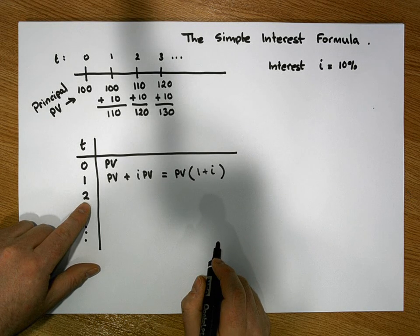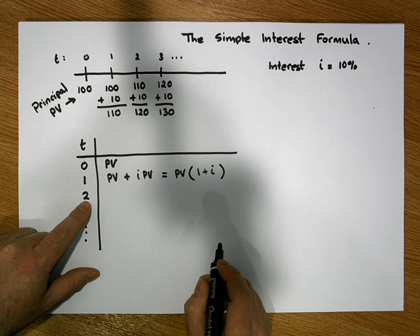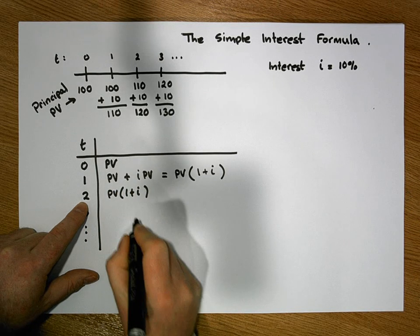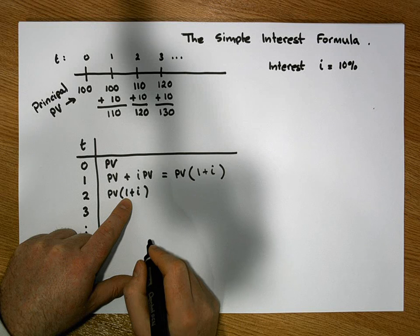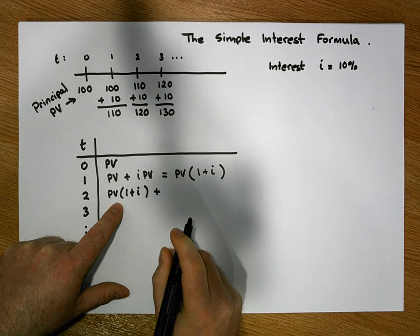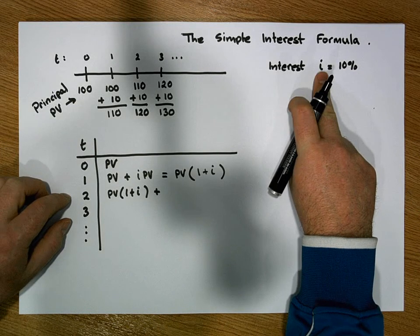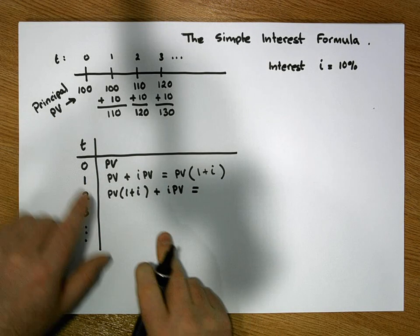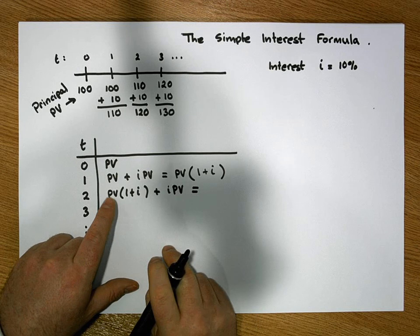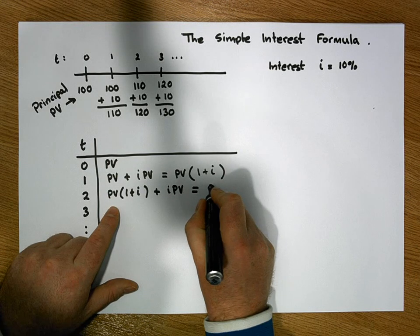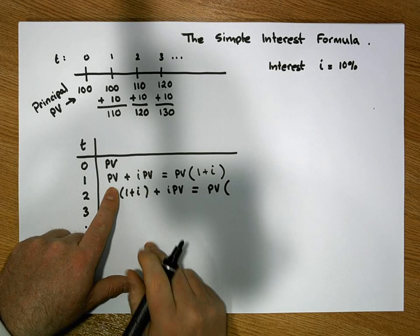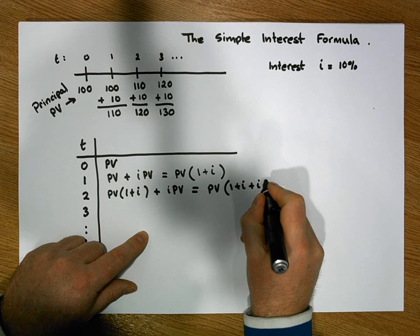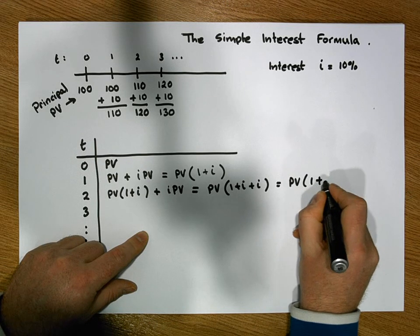Moving to year two: we have what we had in the previous year — PV times (1 + I) — plus an interest payment based on our principal value, which is I times PV. Taking PV as the common factor from both terms, what's left behind is (1 + I) and I respectively, so this simplifies to PV times (1 + 2I).